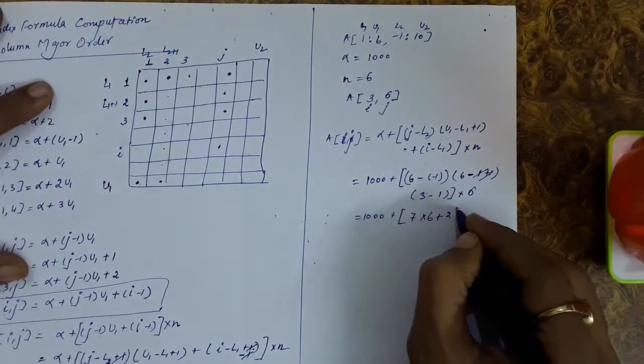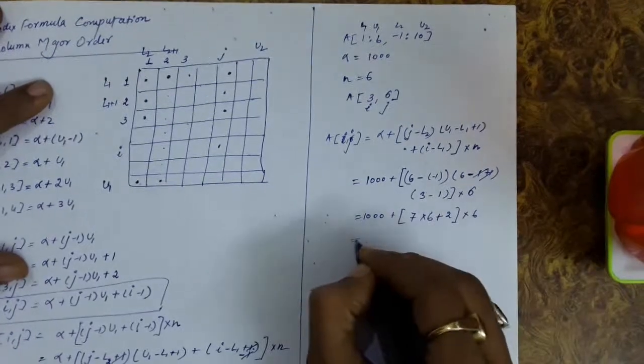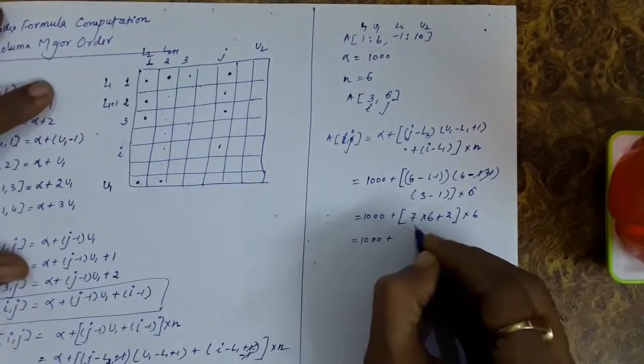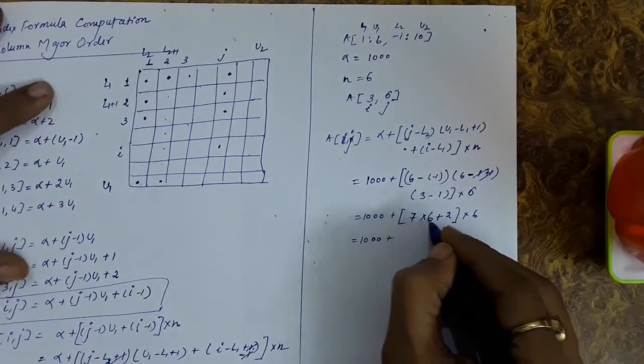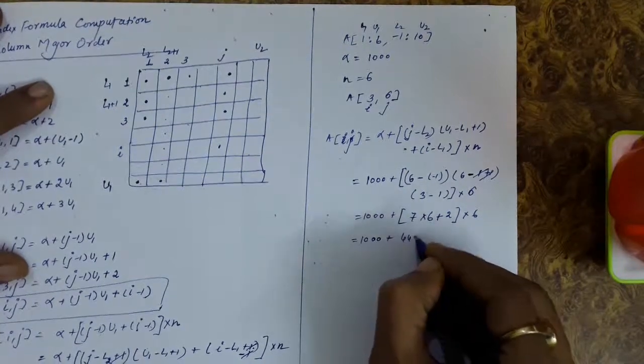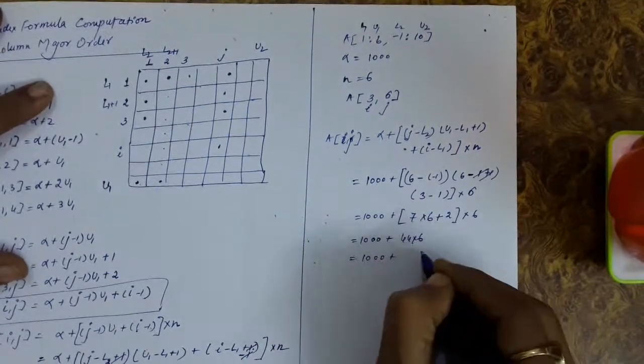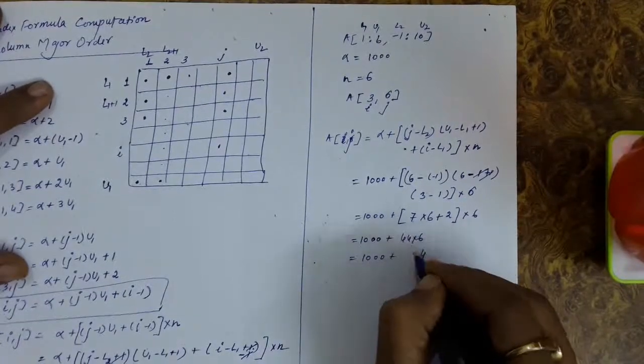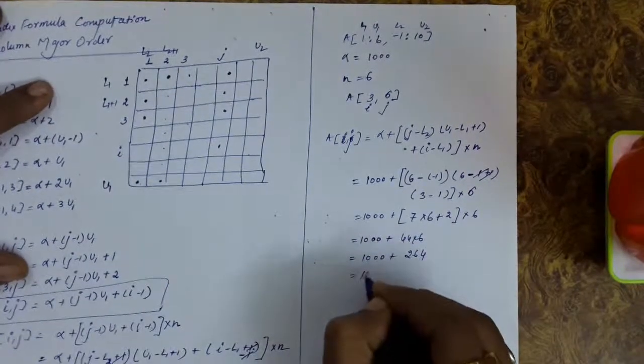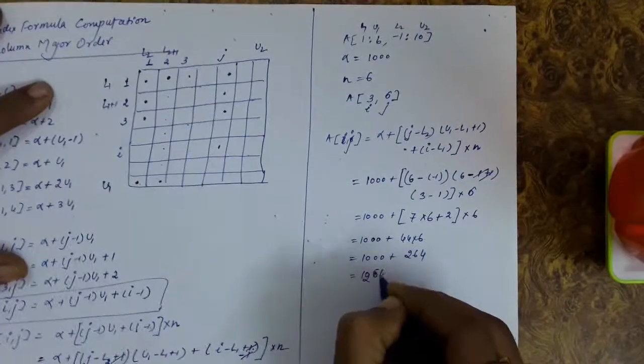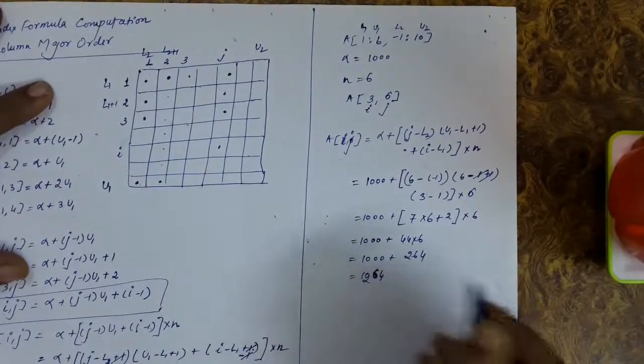2 multiplied with 6. So this equals 1000 plus 42 plus 2, 44 multiplied with 6. 1264 is the address of a[i,j].